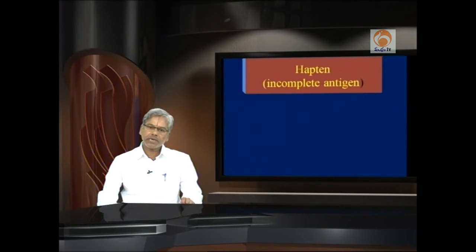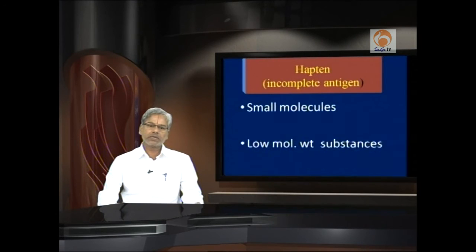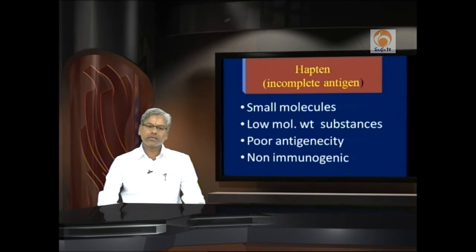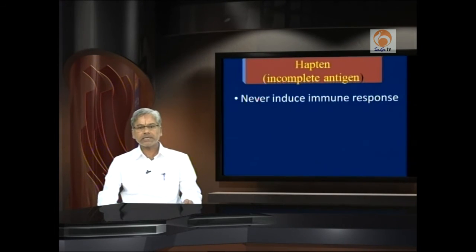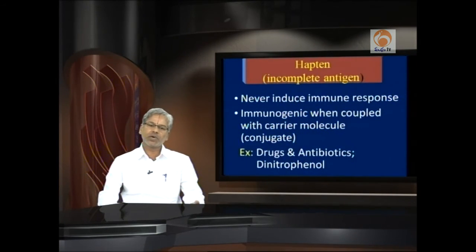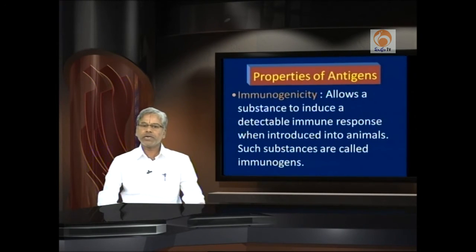A small account of certain incomplete antigens — what we call haptens. A hapten is an incomplete antigen, a small molecule with low molecular weight and poor antigenicity. They are generally non-immunogenic in nature and never induce an immune response — remember, immune response is simply antibody production. Haptens become immunogenic when coupled with certain conjugates called carrier molecules. In daily life we are exposed to a number of haptens like drugs, antibiotics in treatment protocols, and chemicals like dinitrophenol in routine labs.